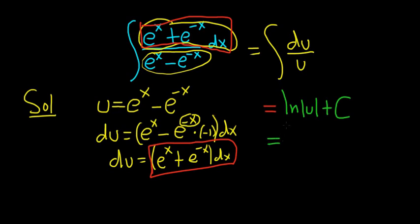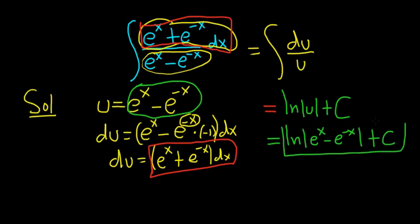And this is equal to the natural log of the absolute value. Now u is simply this, e to the x minus e to the negative x. So this is e to the x minus e to the negative x, absolute value, and then plus our constant of integration, capital C. And that, my friends, is the final answer. I hope this video has been helpful.